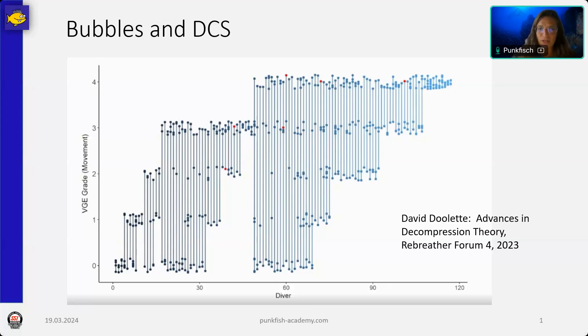Everyone else had a lot of bubbles, but they did not have any symptoms, just nothing. So bubbles do not necessarily mean you get bent, and a certain dive profile does not necessarily give you more or less bubbles. There is something more in the dive and in your body at this specific day that makes the difference between lots of bubbles, no bubbles, or a little bit of bubbles. And this other part that there must be is something that is just not yet really known.